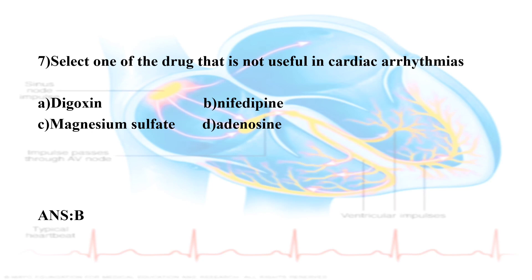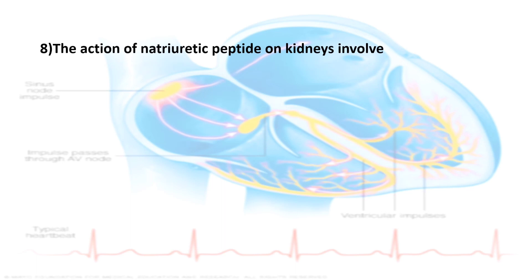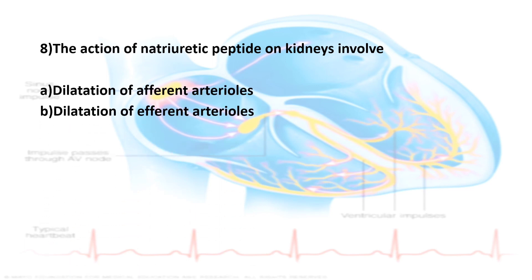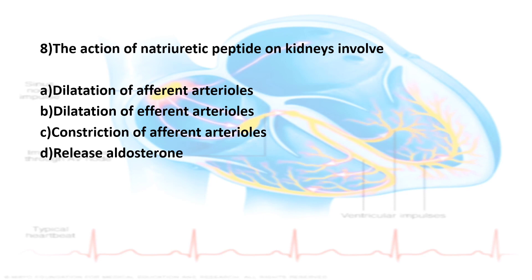Eighth question: The action of natriuretic peptide on the kidneys involves which of the following? Options are: Option A, dilatation of afferent arterioles; Option B, dilatation of efferent arterioles; Option C, constriction of afferent arterioles; Option D, release of aldosterone. The correct answer is dilatation of afferent arterioles combined with constriction of efferent arterioles, which increases glomerular filtration rate.